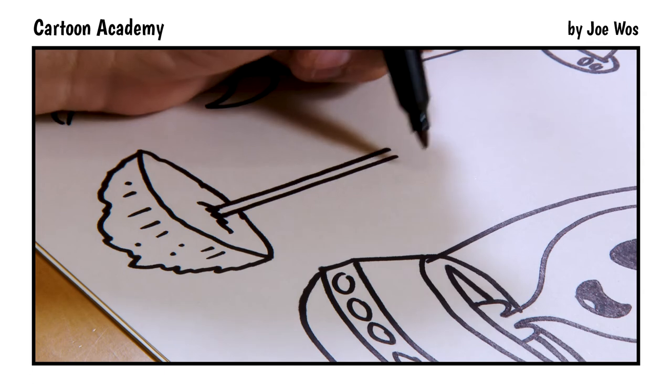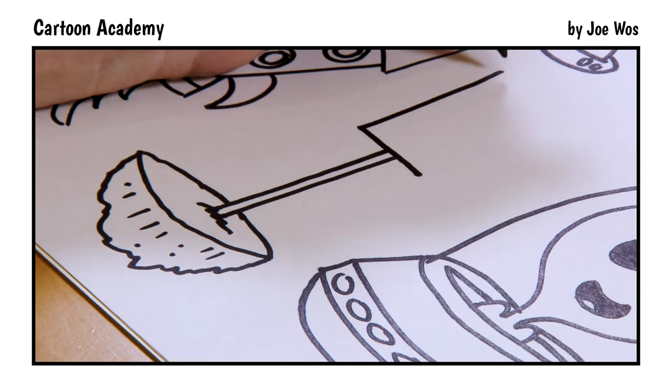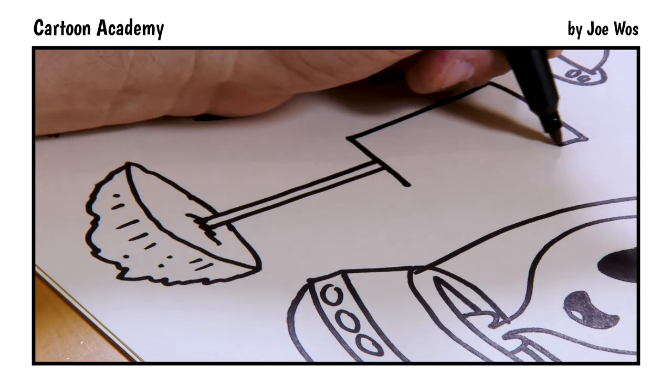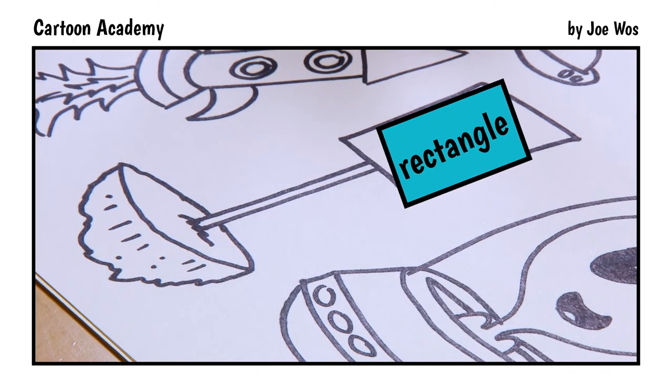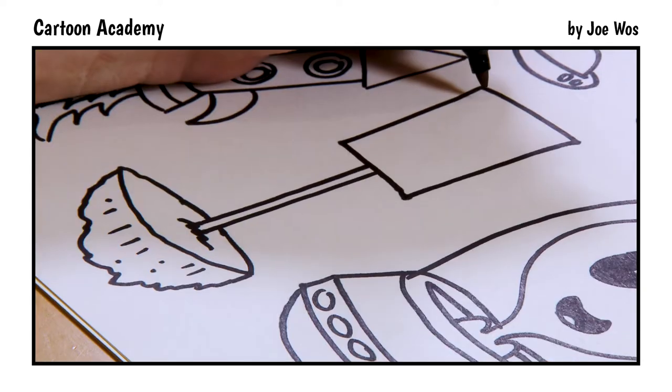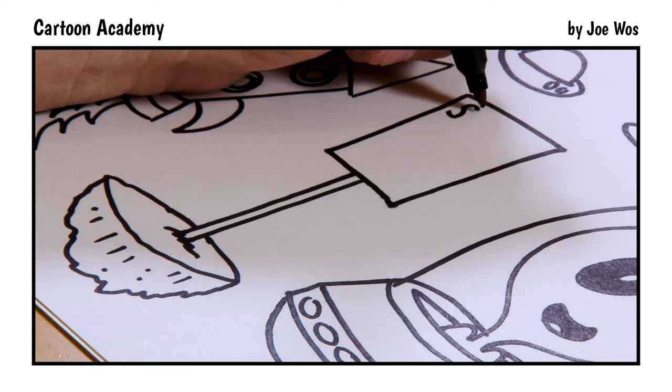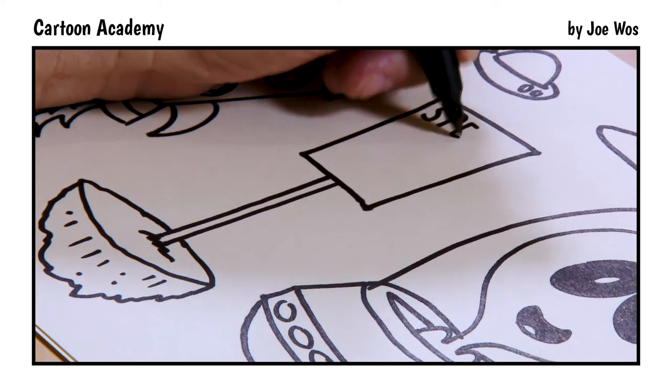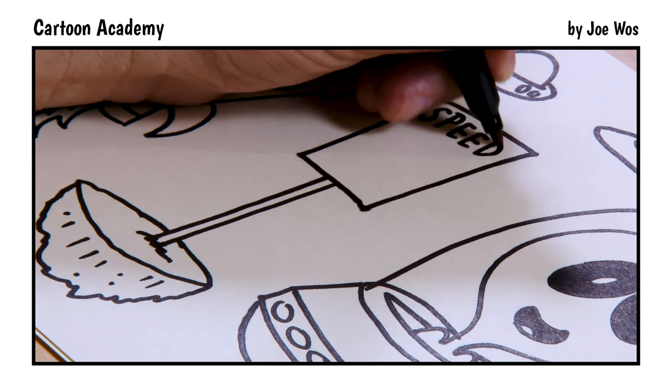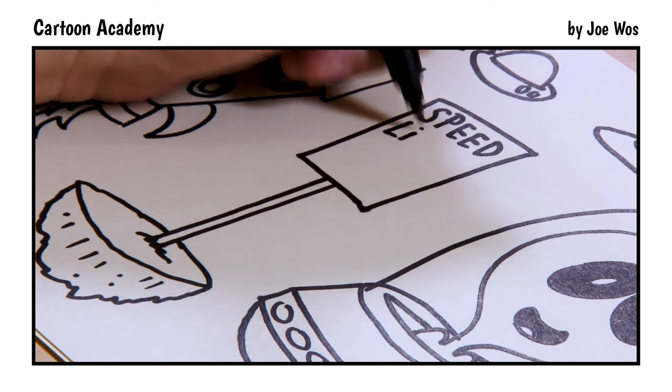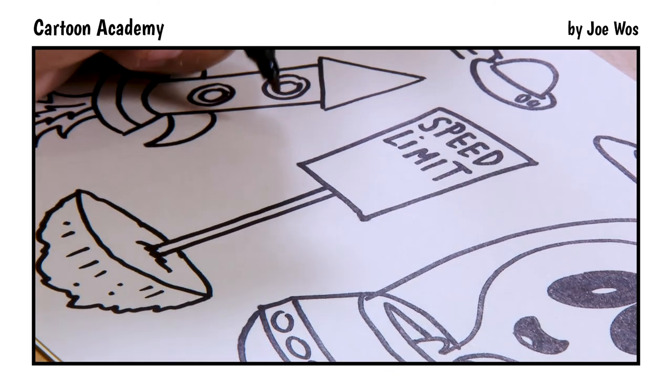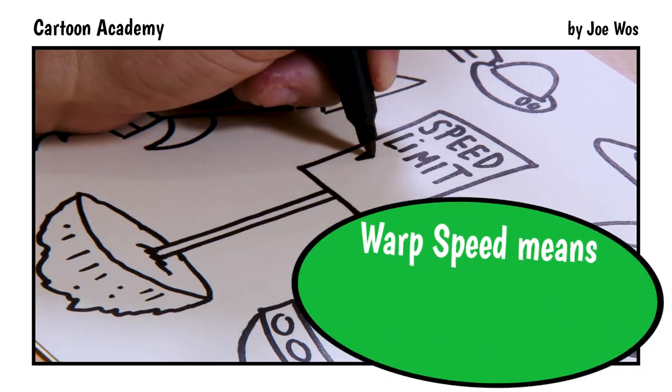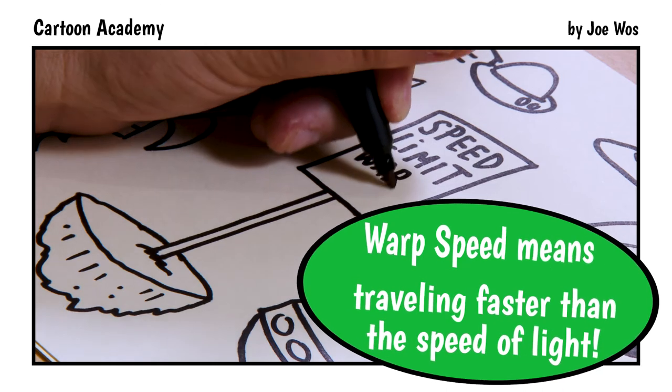Now for our sign. Over, up, over, down and in to make a rectangle. And we're going to write the speed limit: S-P-E-E-D L-I-M-I-T.